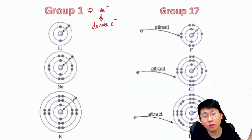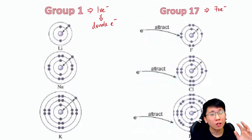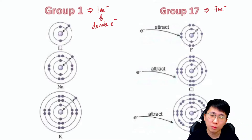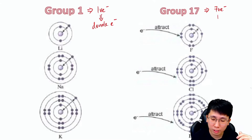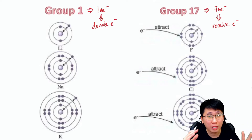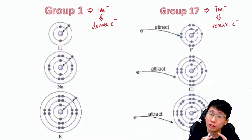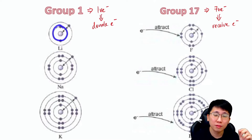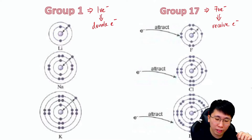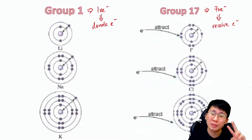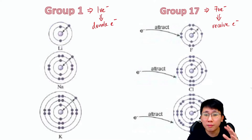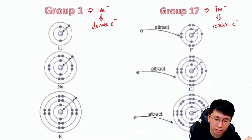Group 17 elements have seven valence electrons, so to become stable they need to do the opposite — they receive or gain one electron. The reason they are unstable is that they don't have the maximum number of electrons in their outermost shell. The maximum is two for the first shell and eight for the second shell onwards.